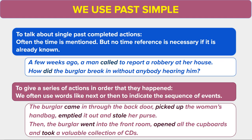We use the past simple to talk about single past completed actions. Often the time is mentioned, but no time reference is necessary if it is already known. Please listen to these examples. A few weeks ago, a man called to report a robbery at her house. How did the burglar break in without anybody hearing him?